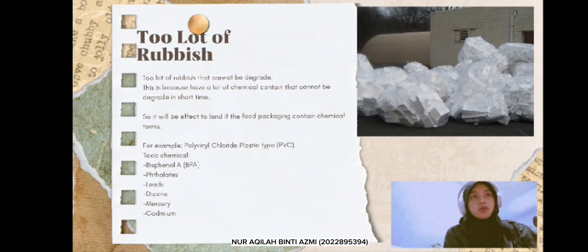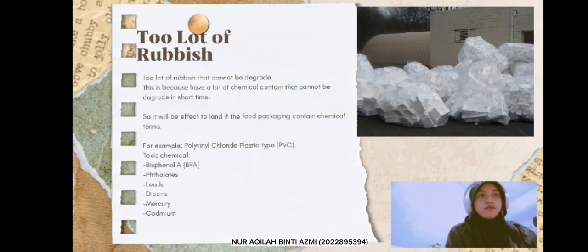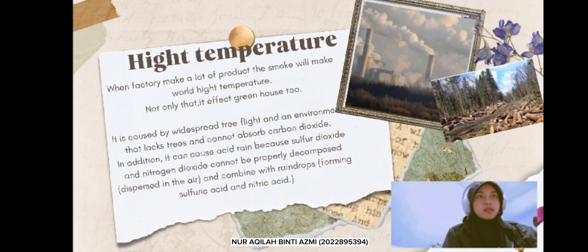Second, a lot of rubbish that cannot be degraded. This is because food packaging has a lot of chemical content that cannot be degraded in a short time, and it will affect the land. For example, BPA, and chemicals such as mercury that are found in food packaging.